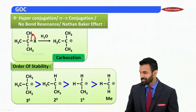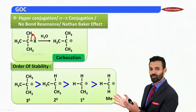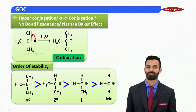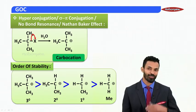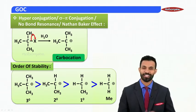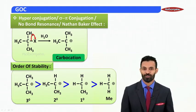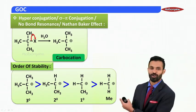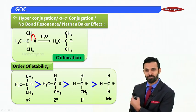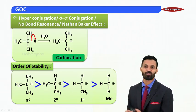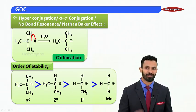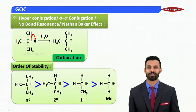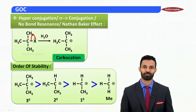The order of stability among all these carbocations is: tertiary is the most stable, followed by secondary, then primary, and methyl is the least stable. This order can be proven by the phenomena of hyperconjugation, which we will learn and prove in the very next module. We stop here for this module — thank you.